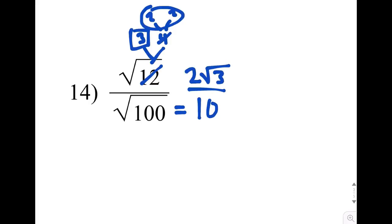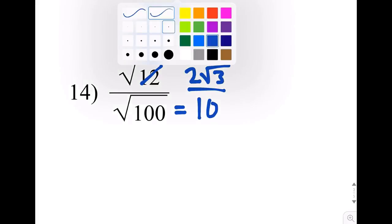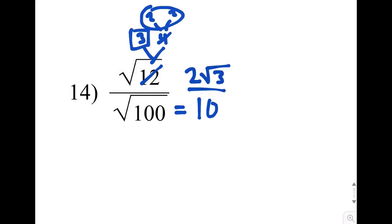From there, we can reduce this the way we would reduce any fraction, which is to say that anytime we have a number on top and bottom of a single fraction, we can divide both by the same thing in order to create an equivalent fraction. So if we divide the top by 2, 2 divided by 2 goes to 1. The bottom divided by 2 would go to 5, meaning our final answer is 1 square root of 3, or simply square root of 3 over 5.